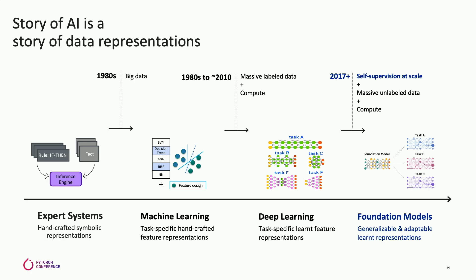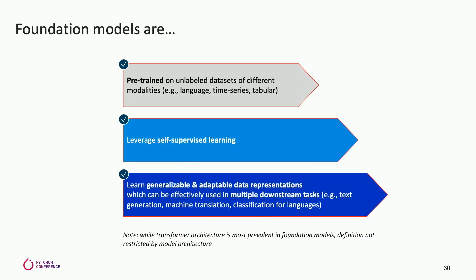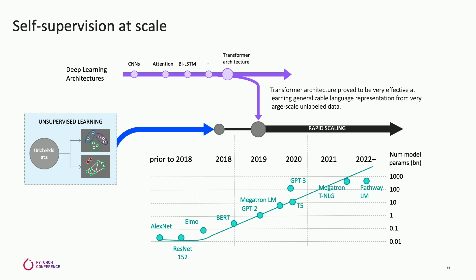The key shift is that you're now looking at learning data representations as opposed to trying a specific task. The hallmark of these foundation models is you do self-supervised learning at scale using massive unlabeled data. Models are getting really large. If you look at the last five years, people started with AlexNet and ResNet, which were at one point the largest models out there, very successful. But since then, models have just grown exponentially.